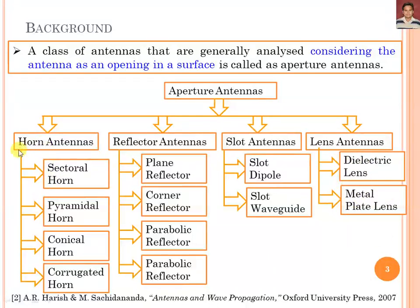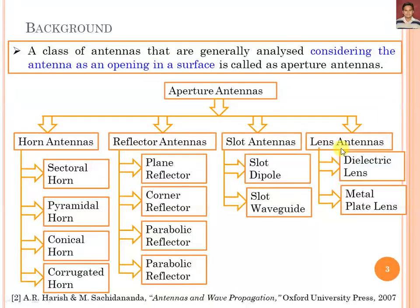These antennas will be discussed in subsequent lectures — Horn Antenna categories, Reflector Antenna categories, Slot Antenna categories, and Lens Antenna categories. Especially Horn, Reflector, and Slot Antenna categories will be discussed in the subsequent lectures. The Lens Antenna will be discussed in the future.